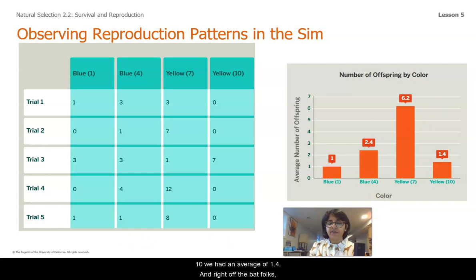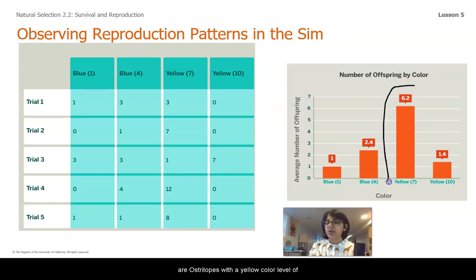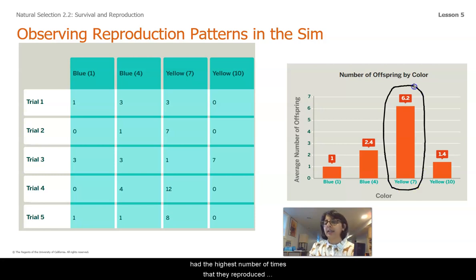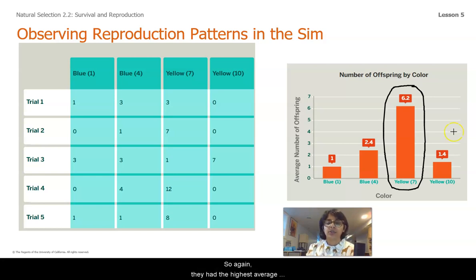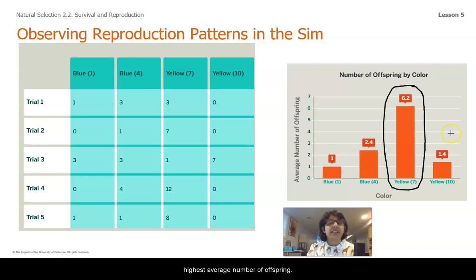Right off the bat, what I'm noticing here is that our Australopes with a yellow color level of 7 had the highest number of times that they reproduced, and thus the highest average number of offspring as well. They had the highest average number of times that they reproduced and also the highest average number of offspring.